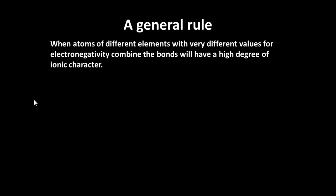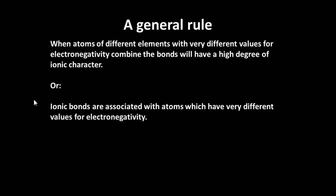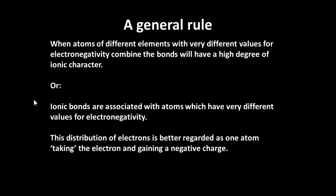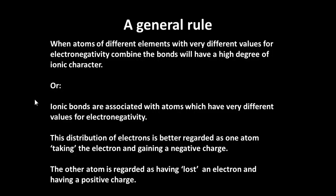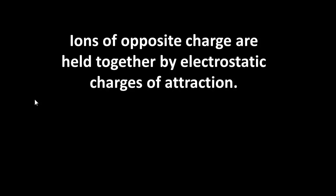So what general rules can we have here? If we've got different values of electronegativity and there's a big difference, then we expect an ionic character for the bond. In other words, very different values for electronegativity or high differences, we have ionic bonds. And so we can regard the distribution of electrons here as atoms taking an electron and gaining a negative charge. And the other atom is regarded as having lost the electron and having a positive charge.